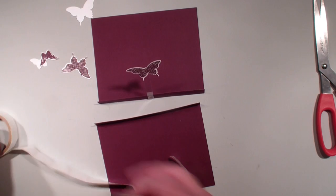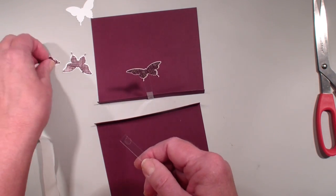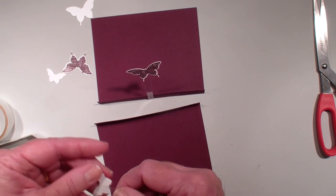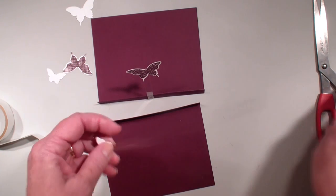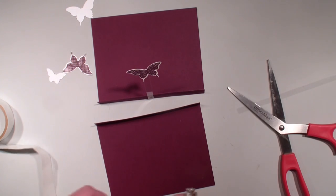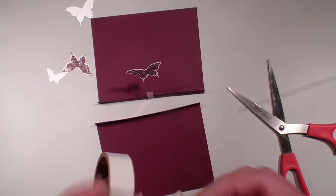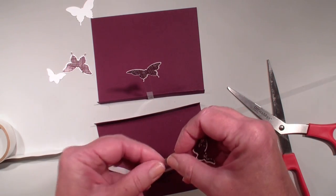Window sheets come two to a pack. They measure 12 by 12, so you get a lot of coverage with that.